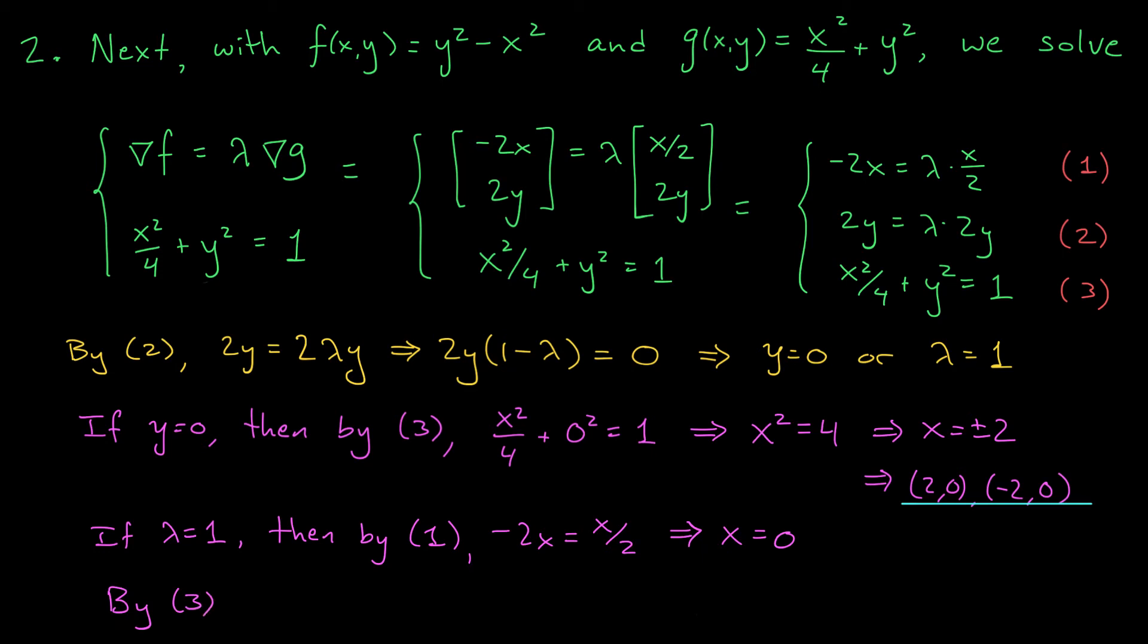By 3, we have 0 squared over 4 plus y squared equals 1. Therefore, y is plus or minus 1. And we get two more extreme points to add to our list, 0 minus 1 and 0, 1.